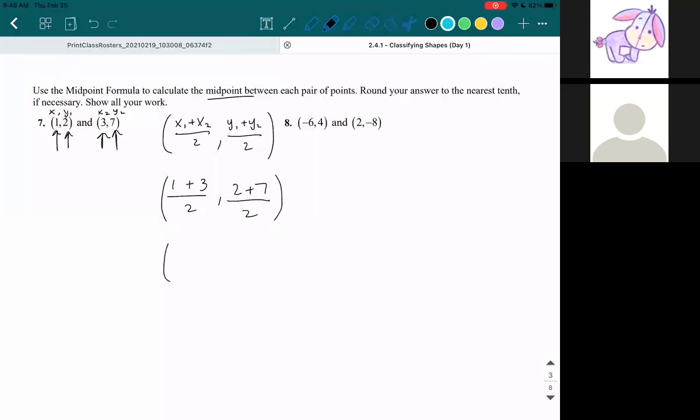So then we just have to simplify this. 1 plus 3 is 4. 2 plus 7 is 9. And then they want us to round it to the nearest tenth if necessary, so we will use a decimal. So 4 divided by 2, that's just 2. 9 divided by 2, that is 4.5. So that's my decimal, the 4.5. We're going to use decimals and not fractions for this one. So this is your final answer for number 7.